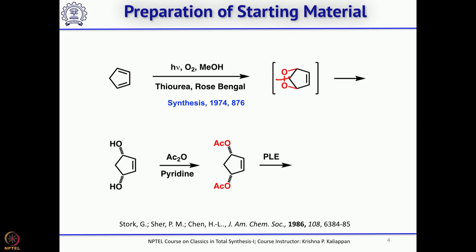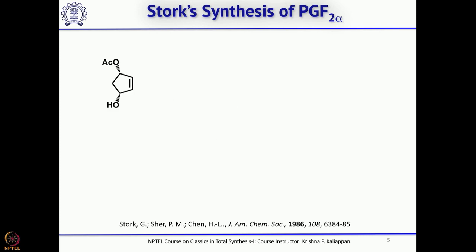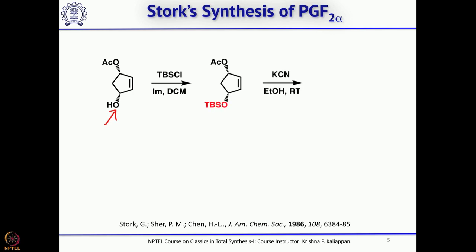This diacetate can be enzymatically and selectively hydrolyzed: one of the acetates is selectively hydrolyzed to give an enantiomerically enriched mono-alcohol with the other acetate intact. This was done successfully with pig liver esterase. The product is optically active. He then treated it with TBS chloride to protect the free hydroxyl group, followed by hydrolysis of the remaining acetate with catalytic potassium cyanide in ethanol at room temperature, giving the corresponding allylic alcohol.